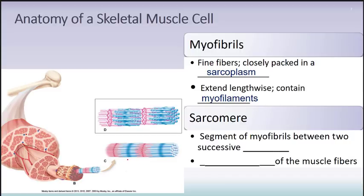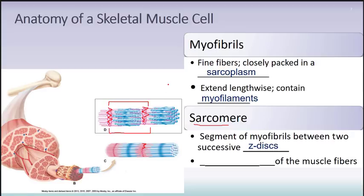An important feature is what's called a sarcomere. The Z-disc is a boundary structure, and from one Z-disc to another Z-disc is referred to as a sarcomere — a segment of myofibrils between two successive Z-discs. The sarcomere is the contractile unit of the muscle fiber and has the ability to shorten. The Z-discs move toward each other, causing an overall shortening when the sarcomere contracts. Multiple sarcomeres contracting together contribute to an overall muscle contraction.